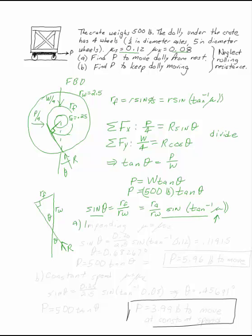So for impending motion, it hasn't moved yet, but it's going to move shortly. I'm going to use mu equals mu s. For constant speed, I'm going to use mu equals mu k. And for each of these things, now I want to solve.